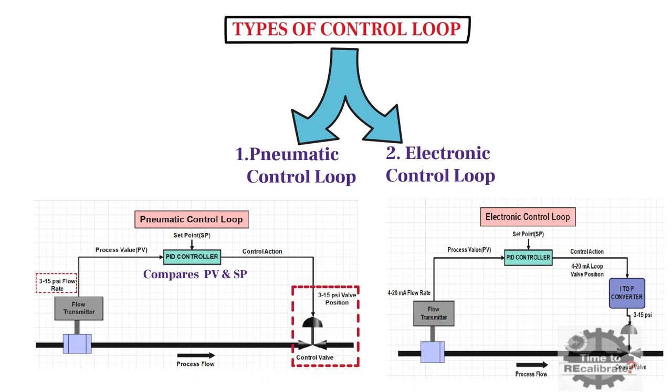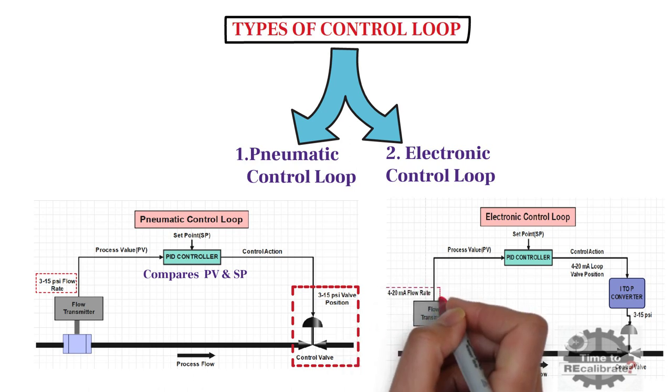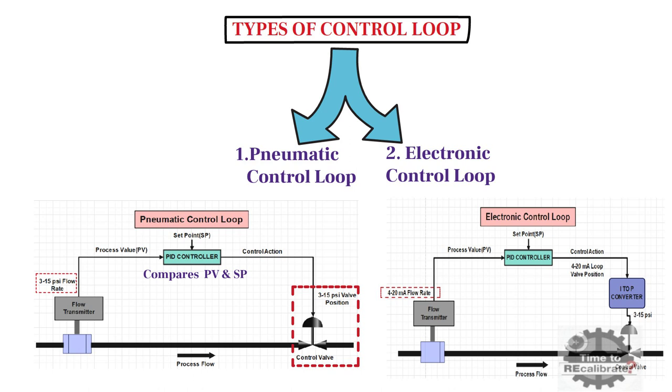As you can see, in electronic control loop, flow transmitter gives 4 to 20 mA signal to PID controller. PID controller compares this signal with setpoint and gives the signal to I2P converter. I2P converter converts 4 to 20 mA signal into pneumatic signal. In other words, I2P converter converts 4 to 20 mA signal into 3 to 15 pounds per square inch signal.